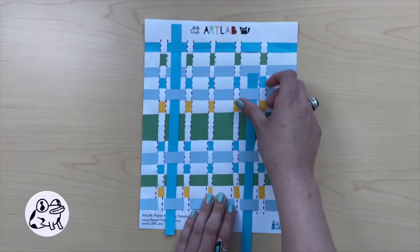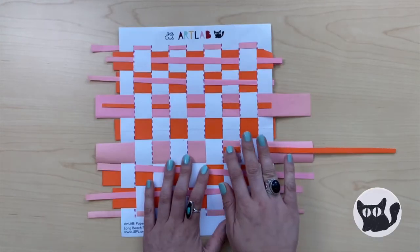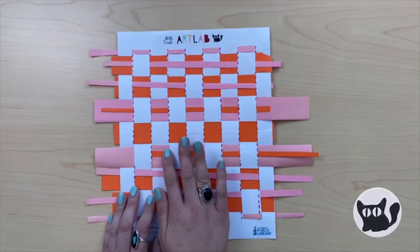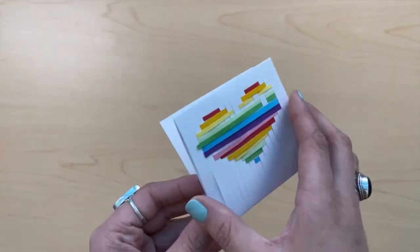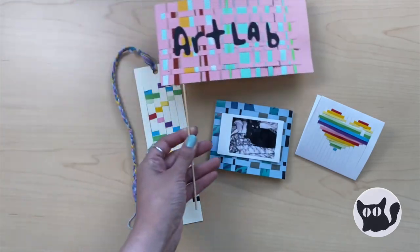Try weaving in the other direction, up and down, not just over and under. Try weaving under two strips instead of just one. How does that change your pattern? Turn your weaving into something like a bookmark or a picture frame or a card or a flag. The possibilities are endless.